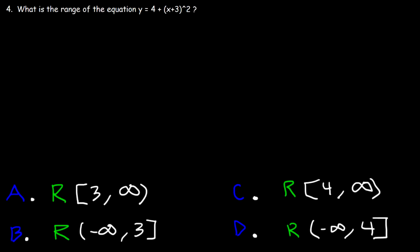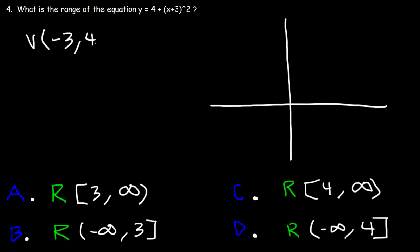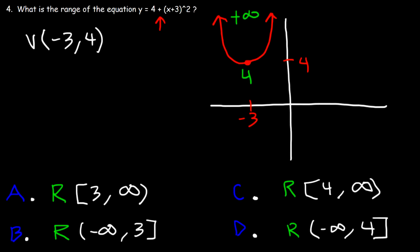Number four: what is the range of y equals 4 plus (x + 3) squared? The vertex is at (−3, 4) — shift the sign on the inside, keep the outside. Since there is a positive sign in front of x squared, the graph opens upward. The lowest y-value is 4, and because it goes up, the highest is infinity. So the range starts from 4 and increases toward infinity — answer choice C.